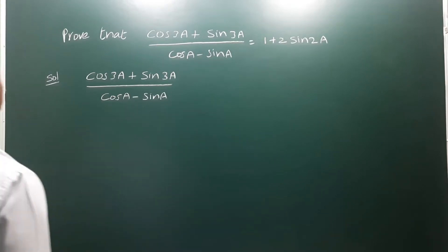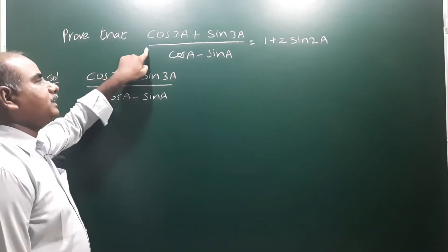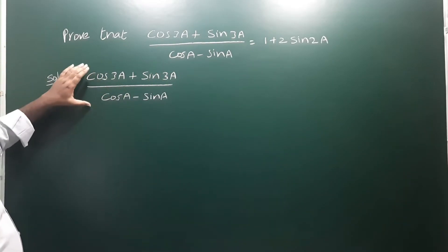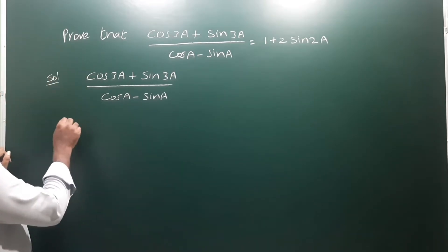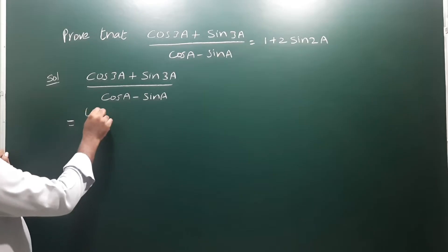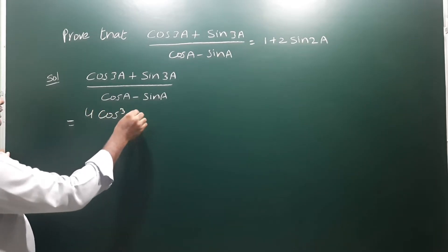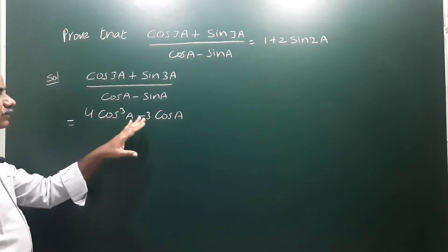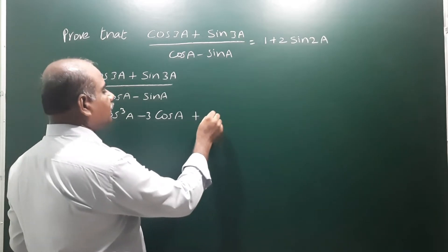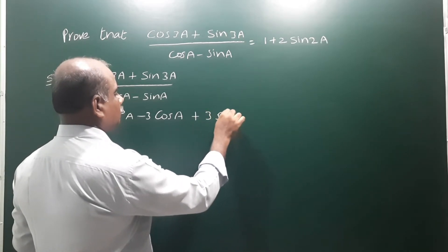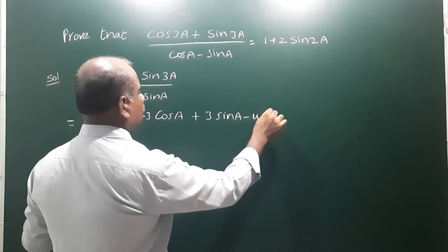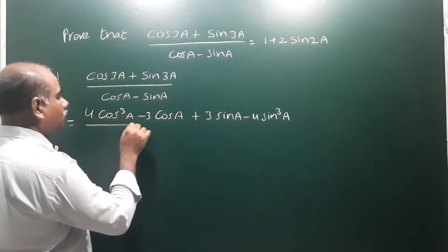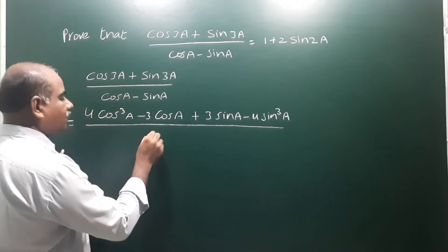Next problem: prove that (cos3a + sin3a) / (cos a - sin a) = 1 + 2sin2a. Let us take the LHS. We know that cos3a = 4cos³a - 3cosa, and sin3a = 3sina - 4sin³a. So the LHS becomes (4cos³a - 3cosa + 3sina - 4sin³a) / (cos a - sin a).